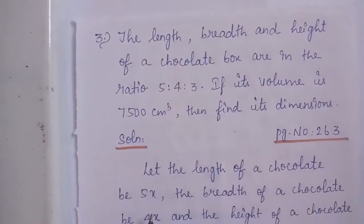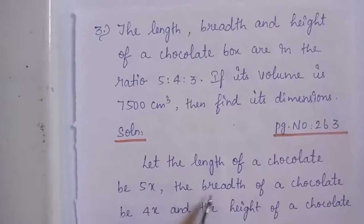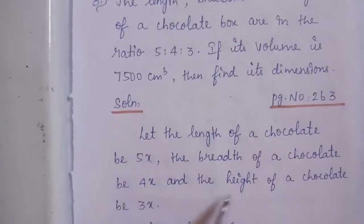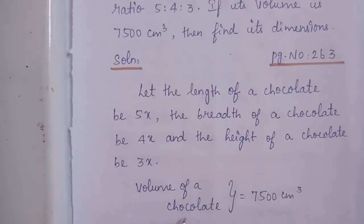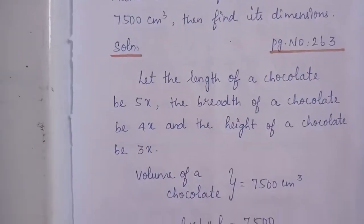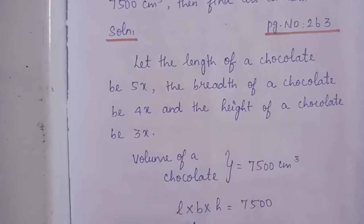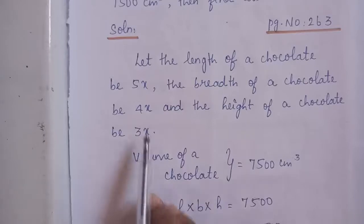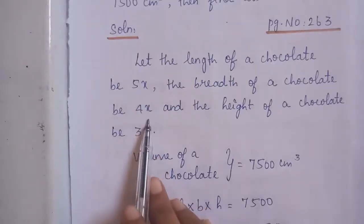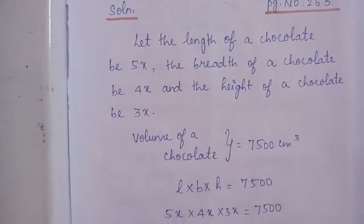Let the length of the chocolate be 5x, the breadth be 4x, and the height be 3x. So the dimensions are 5x, 4x and 3x. Also given that volume of the chocolate is equal to 7500 cm cube. The chocolate is in the shape of a cuboid, so volume of chocolate is length into breadth into height equal to 7500. Here length is 5x, breadth is 4x and height is 3x.